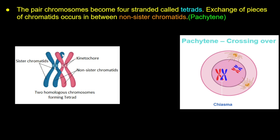In Pachytene, the tetrad is formed and the exchange of pieces of chromatids occurs between non-sister chromatids. This process is called crossing over. The chromatids are the pieces exchanged — shown here as yellow and pink pieces of the chromatids.